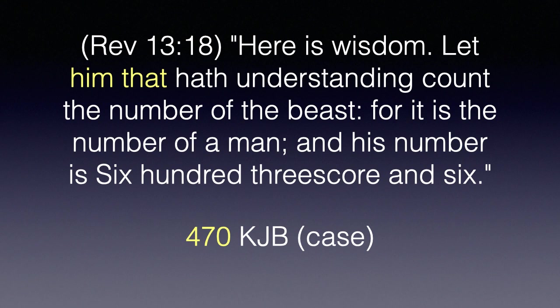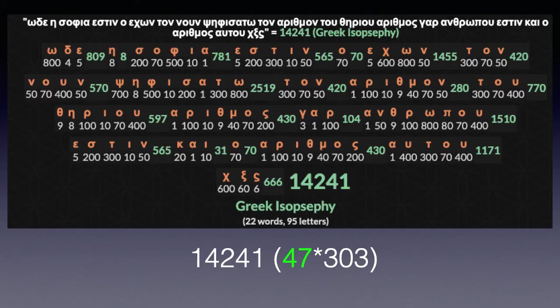We're going to go to the Greek text and then to the 666th verse of the New Testament to see what man we find there. In Revelation 13:18 in the Greek, the last word has a value of 666. If you look at the value of the entire verse in the Greek text: 14,241 — that is a multiple of 47, 47 being the number of the beast.